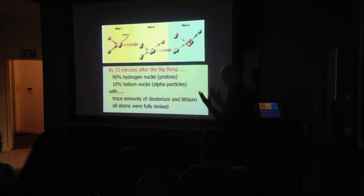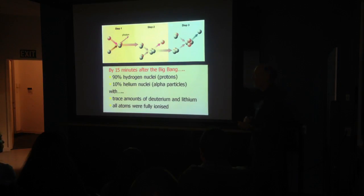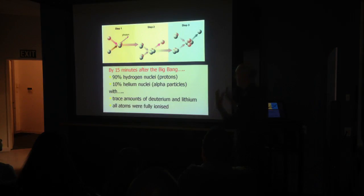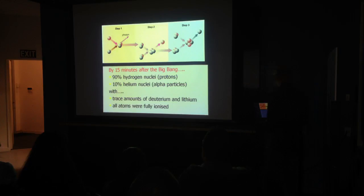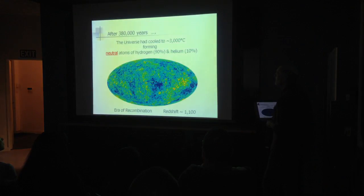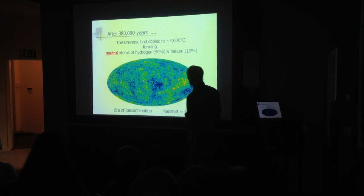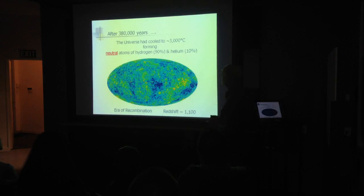None of the atoms could hold on to electrons at that temperature. So after 15 minutes after the Big Bang, we had hydrogen and helium nuclei in a really hot environment, and all that happened for the next hundreds of thousands of years is the universe expanded and slowly cooled. The next epoch you get to is after about 380,000 years.